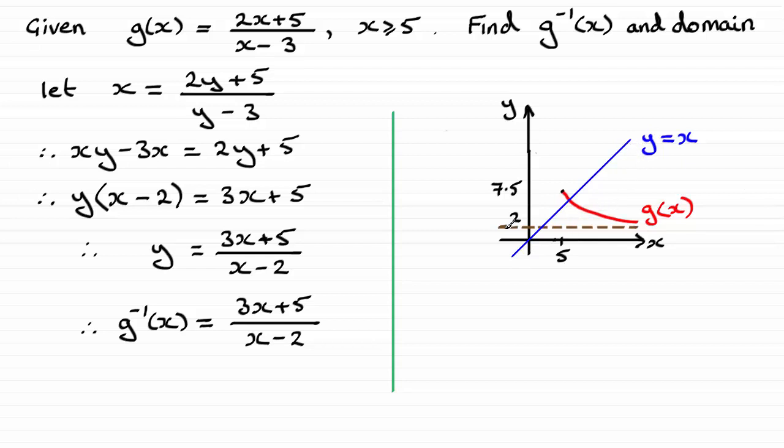Then this asymptote here becomes a vertical asymptote. And if I draw that in, that asymptote is x equals 2. And we reflect this graph here in y equals x and you're going to get this image here.